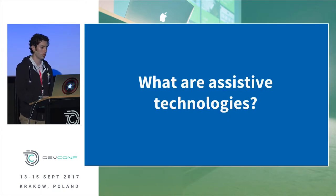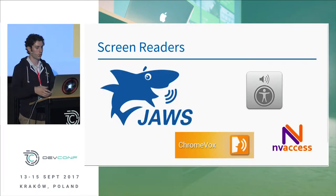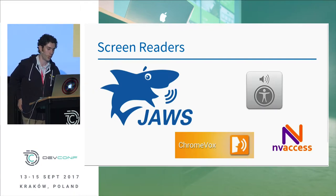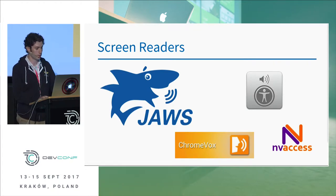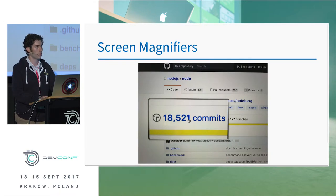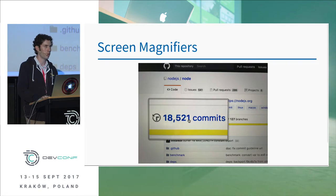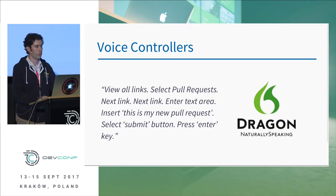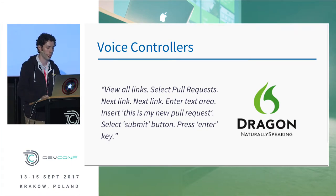What are assistive technologies? There are various software packages people use — I'm not endorsing any particular product, just noting they exist. Screen readers read out content as we just saw. Screen magnifiers for people with low vision expand one part of the page and let users scrub over it. Voice controllers are for people who can't use a mouse or keyboard — you use a mic, talk to your computer, and give it commands like 'view all links' or 'select the pull request link.'